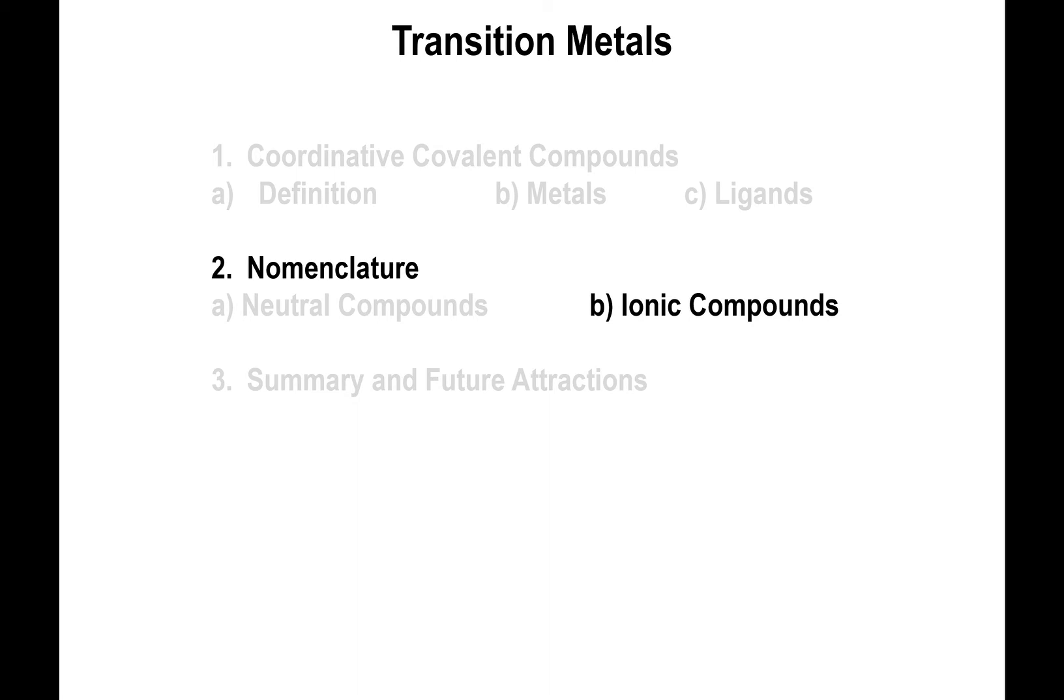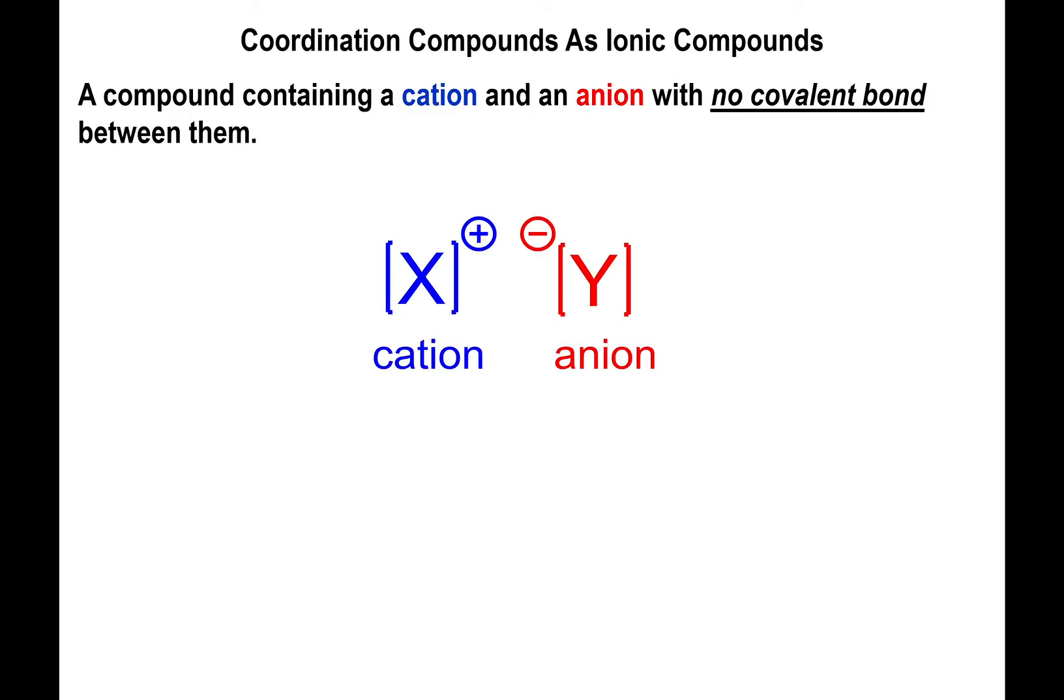We're about to complicate the picture a little bit more because this time around we're going to talk about ionic compounds where we do have a cation and an anion present. The cation has a positive charge, it appears first on the structure, the anion has a negative charge and appears last on the structure.